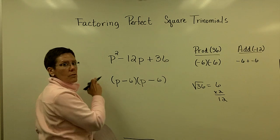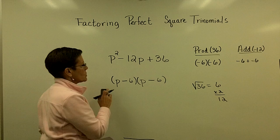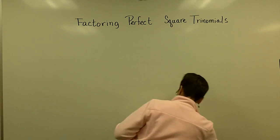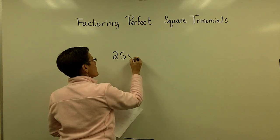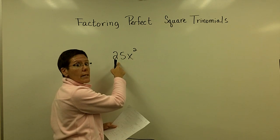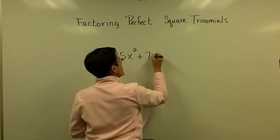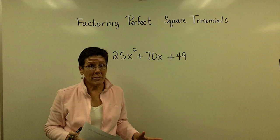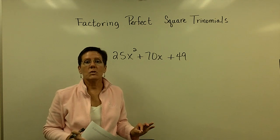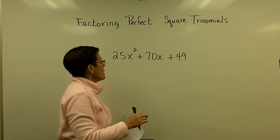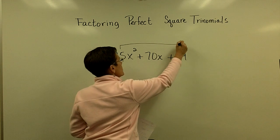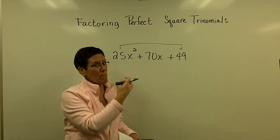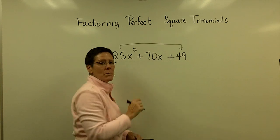Now this works if the coefficient in front of the square term is also a square. So let's look at this problem. I have 25x squared. That's a perfect square. I can take the square root of 25. Plus 70x plus 49. Previously, I factored this by the AC method. So I multiplied the A value times the C value. And I looked for two numbers whose product is that big number and added to be 70. But if I could catch this before I got any further and I could say to myself,